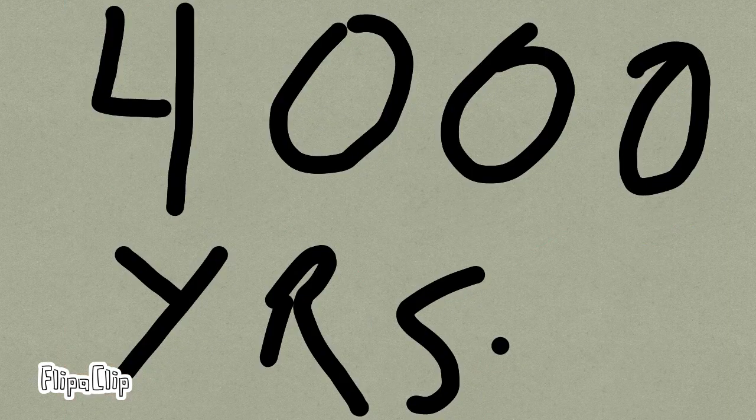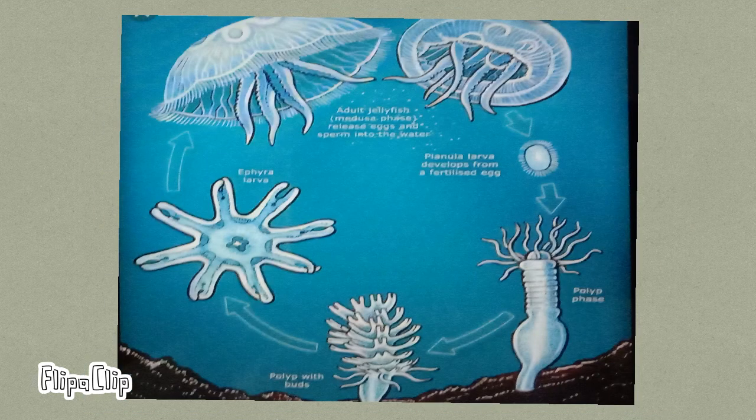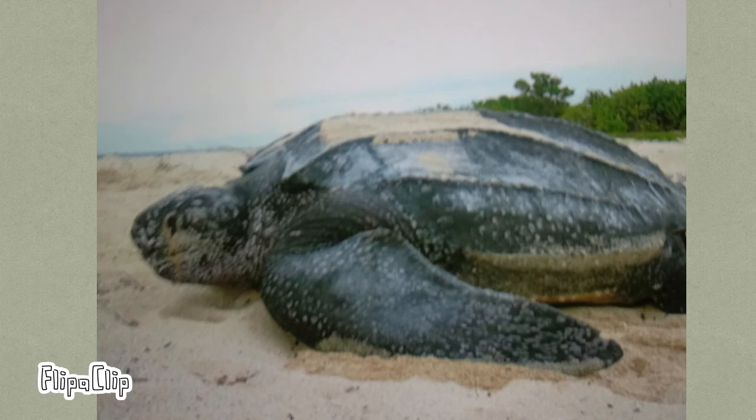Number one: trees. They can be really old. The oldest is 4,000 years old.